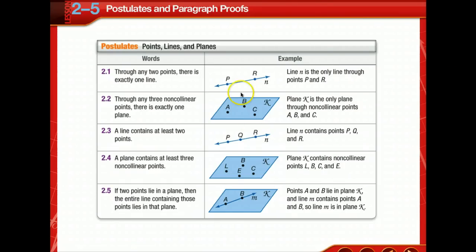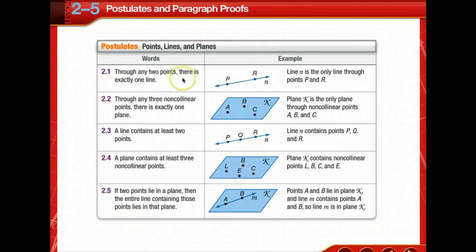Here's the beginning of our postulates. The first one — you don't necessarily need to name it 2-1, because it depends on which book you're using. We're going to refer to it as the postulate about the line: through any two points, there is exactly one line. It's going to be very important that you write in words what this postulate is, draw a picture of it, and explain it in your example so that when working through proofs, you have something easy to go back and find.